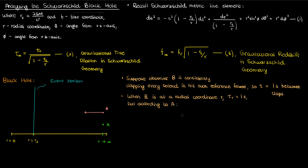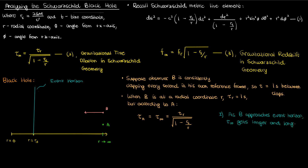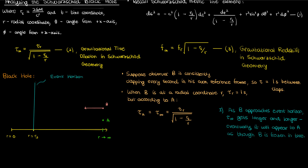However, according to observer A at infinity, the time between B's claps gets dilated or increased according to B's position. So tau sub A, or tau sub infinity, according to our gravitational time dilation equation 2, is actually increased by a factor given by this square root. So as B approaches the event horizon, the time between each of B's claps gets longer and longer according to observer A, because this denominator gets smaller and smaller. Eventually when B gets really close to the event horizon, the time between each clap will get so prolonged according to observer A that it'll be as if observer B is frozen in time. This is our first conclusion.